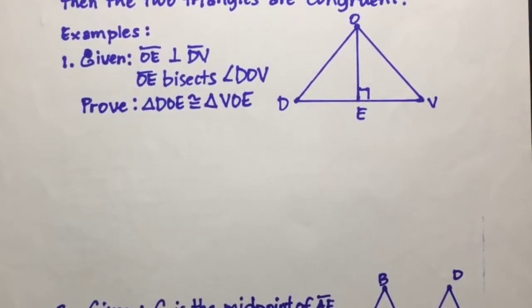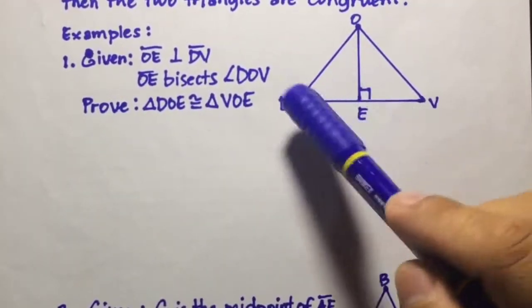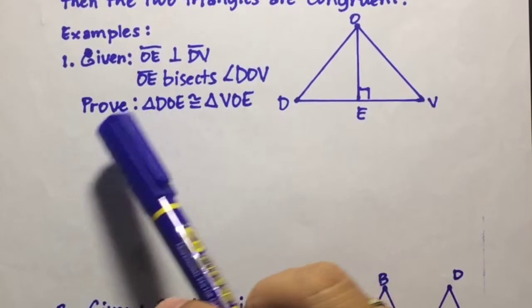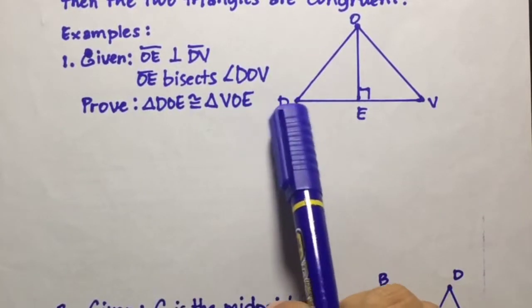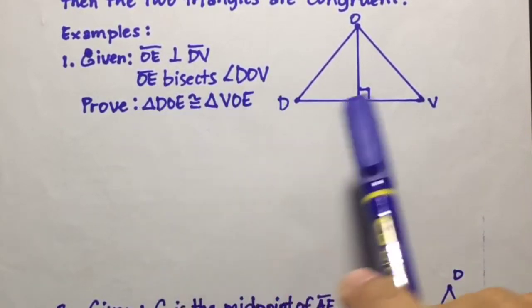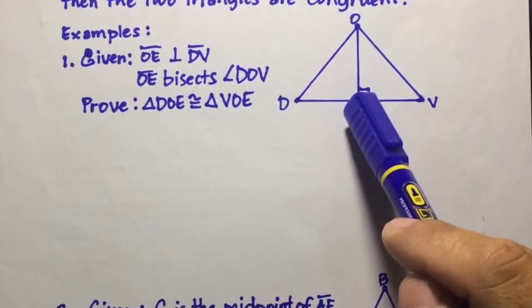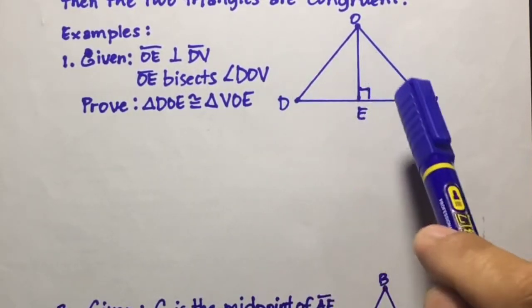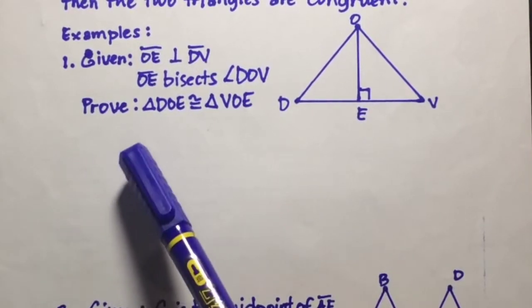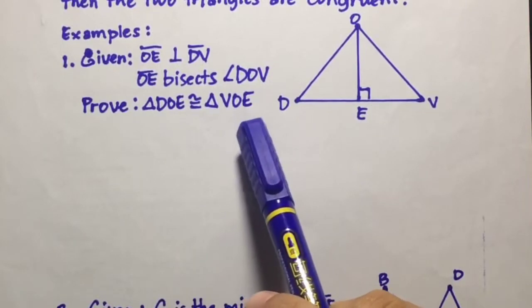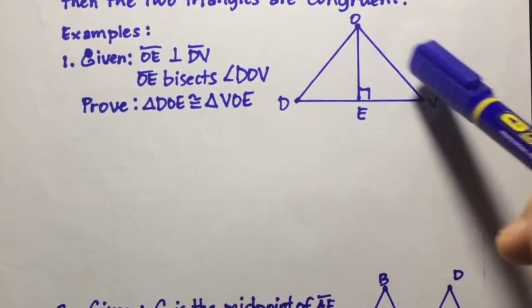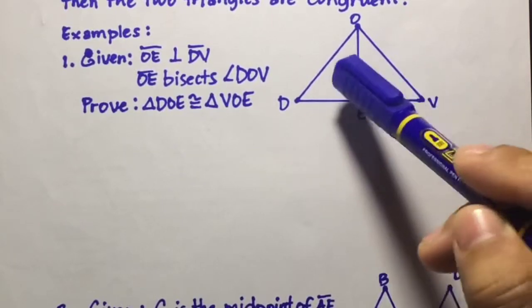Now let's have examples of problems that can be solved using the ASA congruence postulate. For example number one, this is the figure. Given here that line segment OE is perpendicular to line segment DV, and line segment OE bisects angle DOV. We are going to prove that triangle DOE is congruent to triangle VOE.